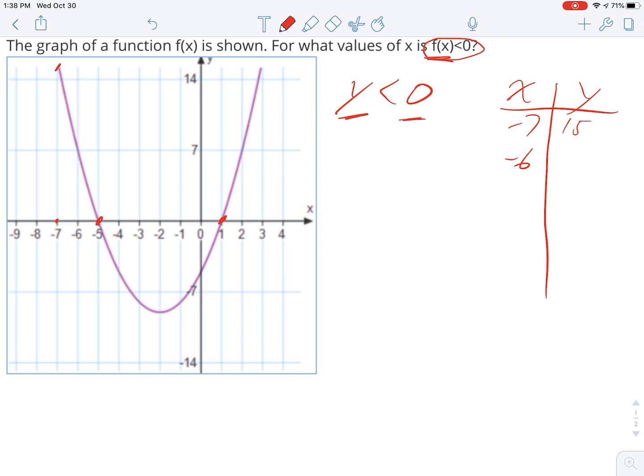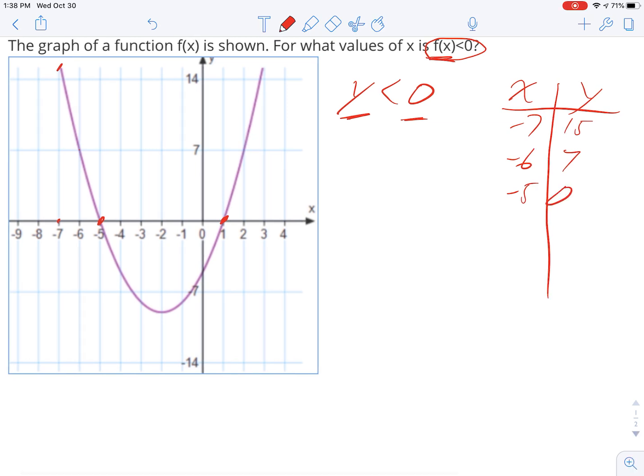And when x is negative 6, it looks like the y value is 7. When x gets down to negative 5, the y value is 0. And now notice that, so that's where the y values, right there,